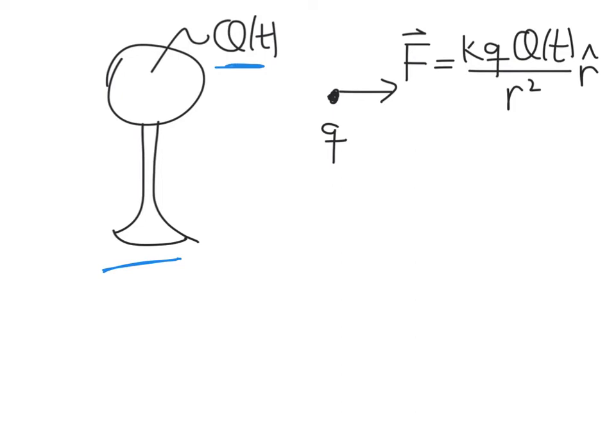So we can imagine, for instance, that the Van de Graaff is charging up, so the Q is either going up, or we could imagine that the Van de Graaff generator has been turned off, and so the large Q is now leaking out into the atmosphere. The charge is being extracted from the sphere by the air, and in that case, the big Q is going to go down.